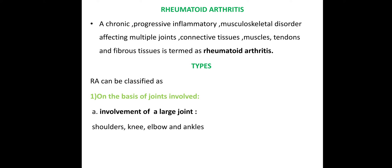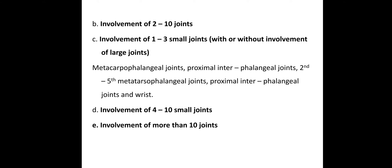Classification on the basis of joint involvement: first type is involvement of large joints; second type is involvement of 2 to 10 joints; third type is 1 to 3 small joints such as finger joints and metacarpophalangeal joints; fourth type is involvement of 4 to 10 small joints; and fifth is more than 10 joints, which is a severe disorder.